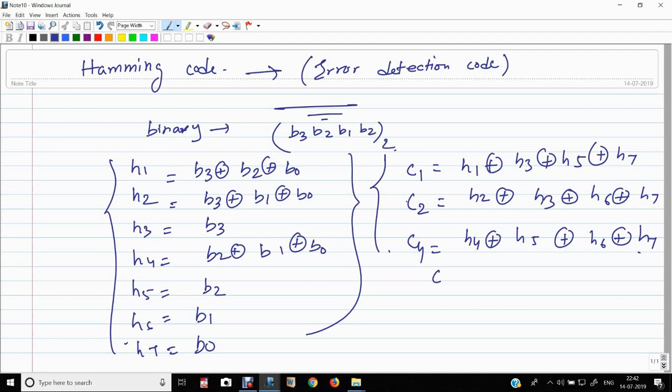Suppose C1, C2, C4, it returns 0, 0, 0. There will be no error in this case. If this is equal to 1, 1, 0, 1.